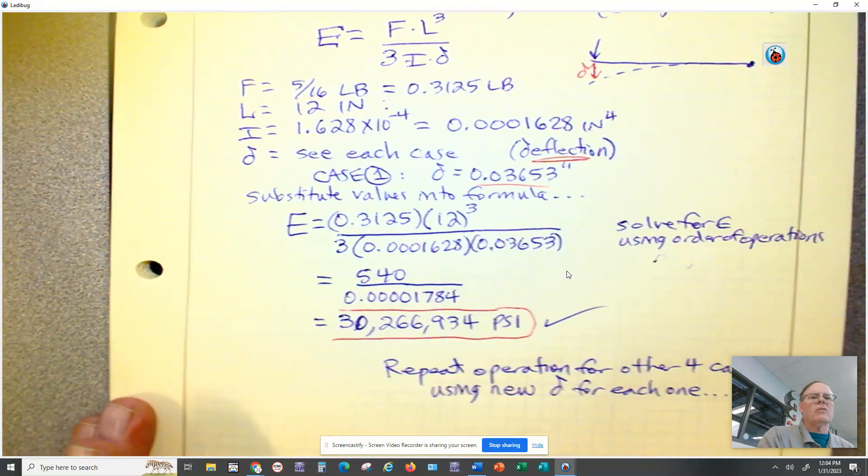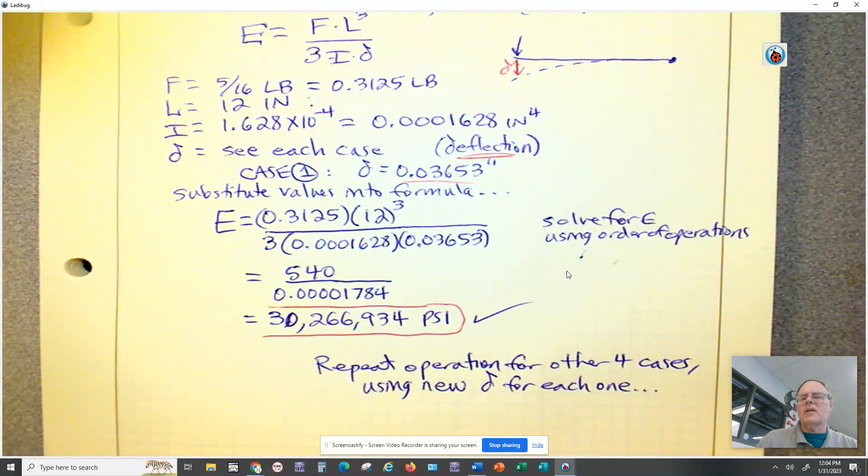Don't be afraid of that really large number because typically modulus of elasticities for steel or metal is in that range of 20 to 30 million PSI. So that gives you the way you're going to do this assignment. You're going to use the same formula over and over again, the same F, the same L, the same I. You're simply going to change the deflection, which will change this little number you put in the bottom. Then you're going to work through the calculations again to come up with the modulus of elasticity for each of those six different cases.